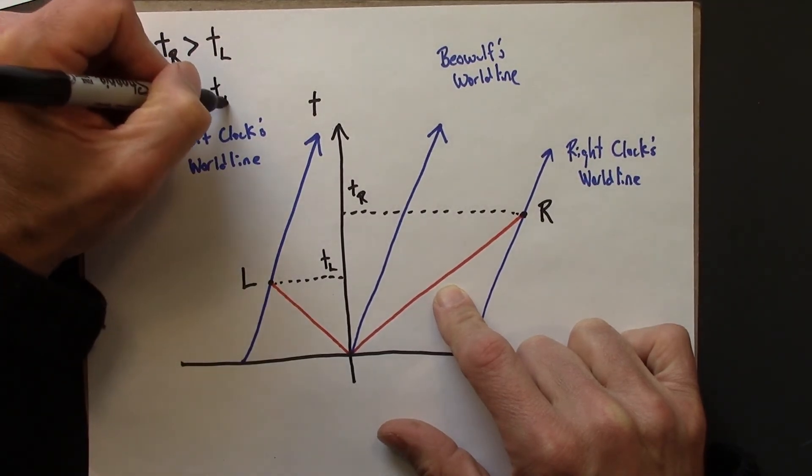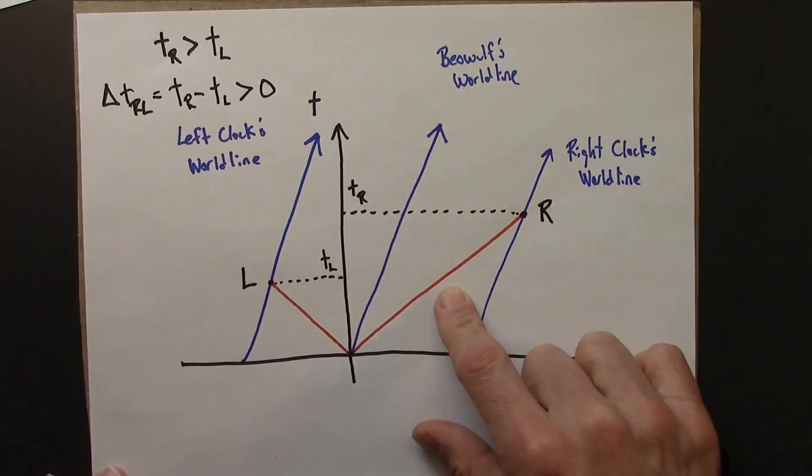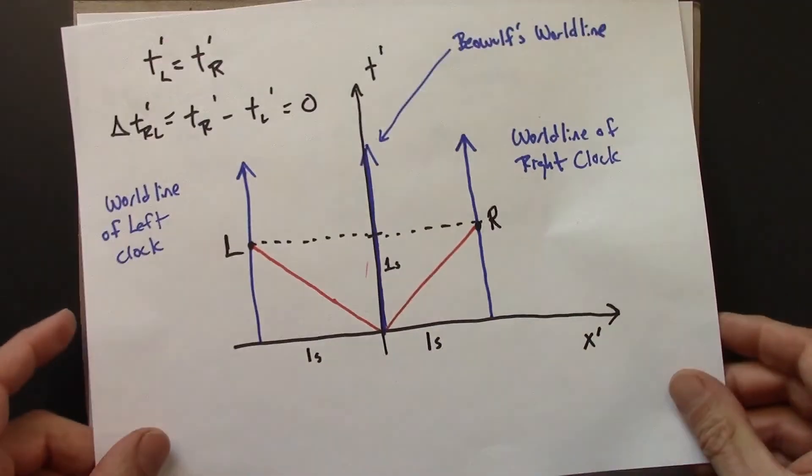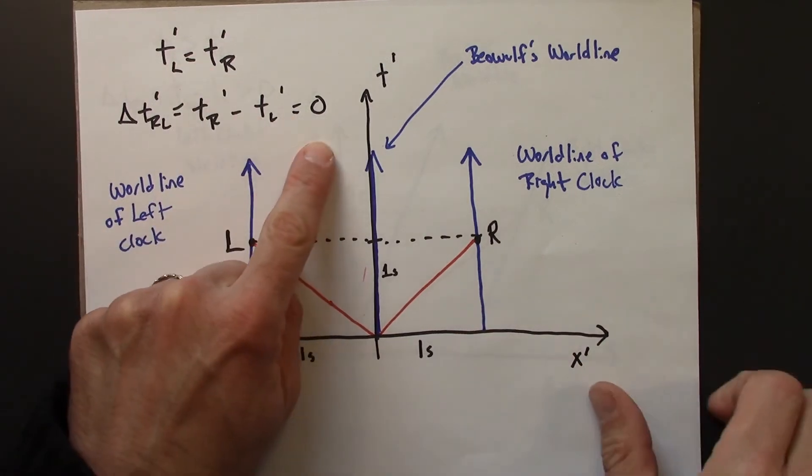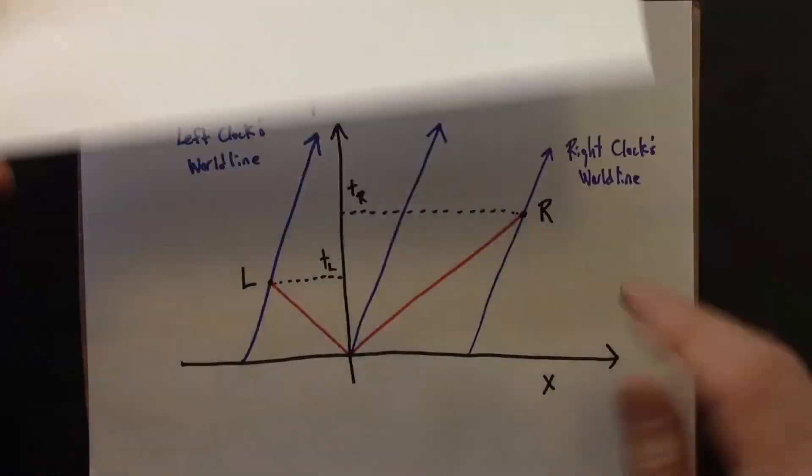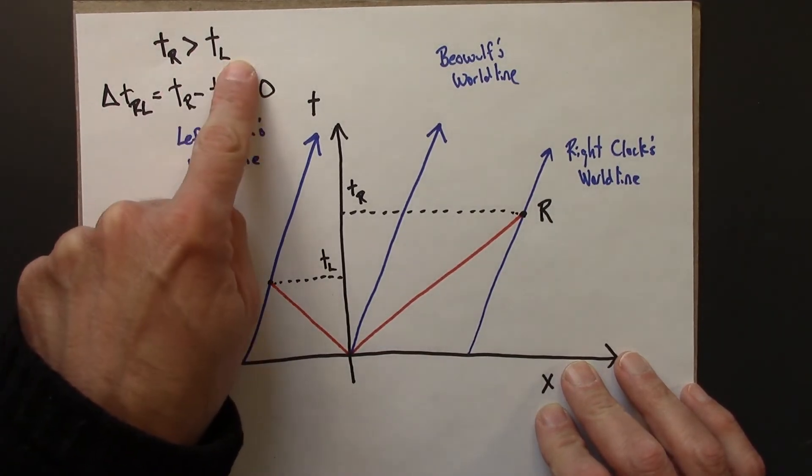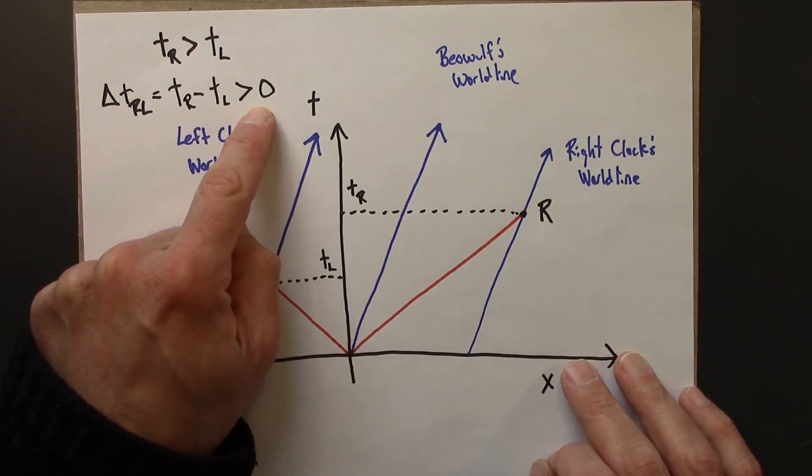Another way to say this: tR minus tL is greater than zero. So Beowulf observed that these two events happen at the same time. The difference between them is zero. Anastasia has a very different conclusion. She says, actually, R happened after L. And you're crazy if you think these two things happened at the same time.